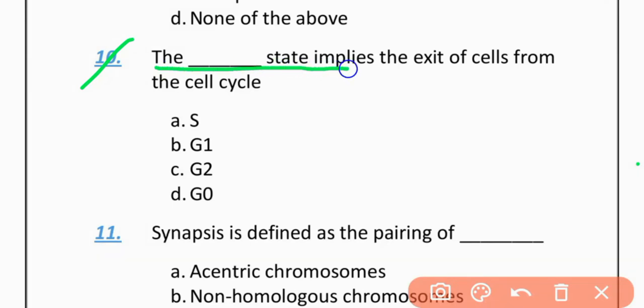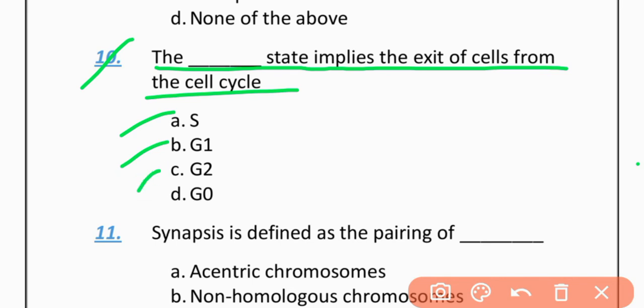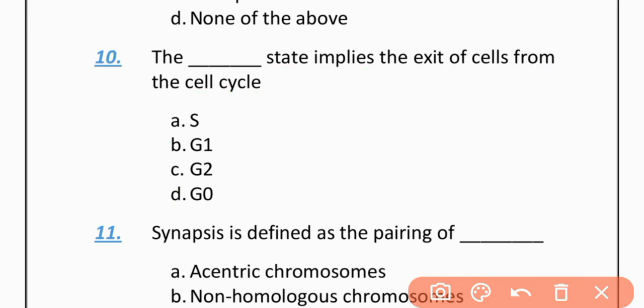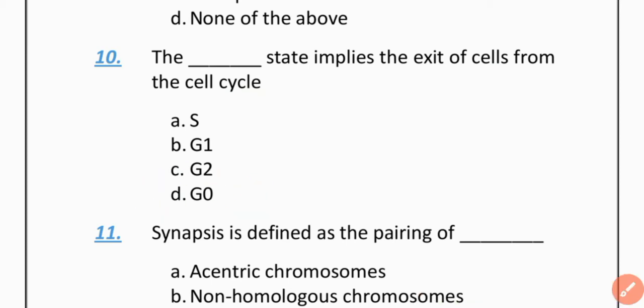MCQ 10: The state that implies the exit of a cell from the cell cycle is — Option A: S phase. Option B: G1. Option C: G2 phase. Option D: G0 phase. The correct option is D — G0 phase.